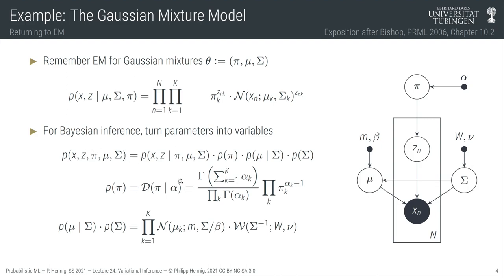To perform Bayesian inference — to build a probabilistic version of this model — we replace the parameters mu, sigma, and pi with random variables to which we assign probability distributions. This turns the likelihood into a full joint generative model for data x, assignments z, and variables pi, mu, and sigma. I call them variables now rather than parameters because they've taken on this new role.